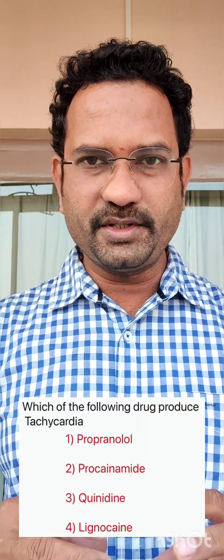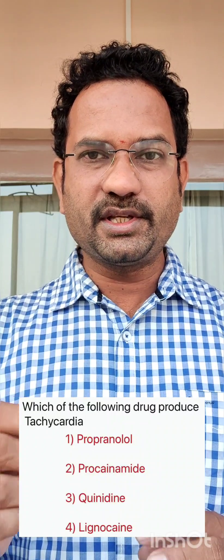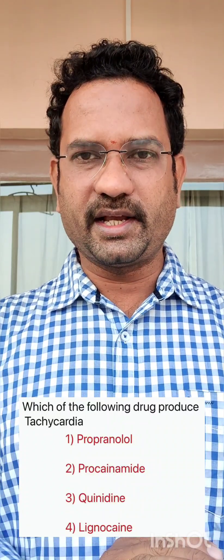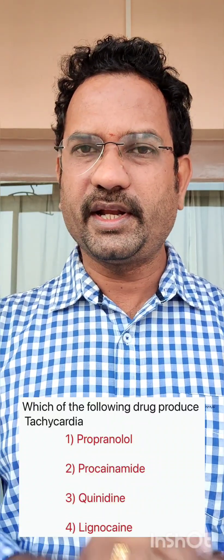When blood pressure falls, the body automatically increases heart rate to correct it. This is called reflex tachycardia. So reflex tachycardia is one of the adverse effects of quinidine. Out of these four options, quinidine is the drug which causes reflex tachycardia.